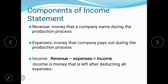The next component is expenses — the money that a company pays out during the production process. This includes payments to its employees, utility bills, transportation costs, and many other expenses incurred during production. Income is what you get when you subtract expenses from revenue, and that belongs to the owner of the company.